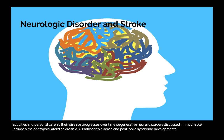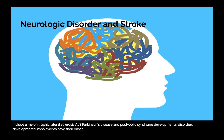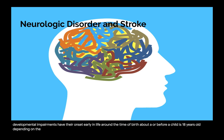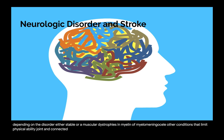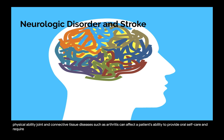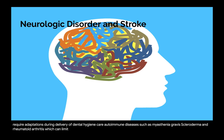Developmental impairments have their onset early in life, around the time of birth, or before a child is 18 years old. Depending on the disorder, either a stable or a progressive impairment can result. Developmental disorders highlighted in this chapter include cerebral palsy, muscular dystrophies, and myelomeningocele. Other conditions that limit physical ability, such as joint and connective tissue diseases like arthritis, can affect a patient's ability to provide oral self-care. Autoimmune diseases such as myasthenia gravis, scleroderma, and rheumatoid arthritis can also limit physical ability.